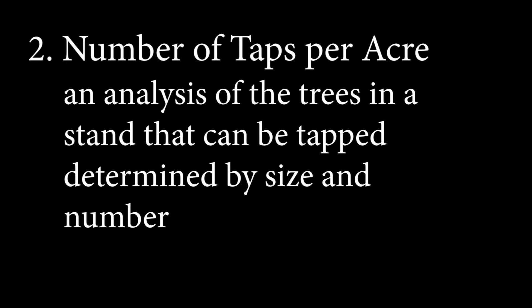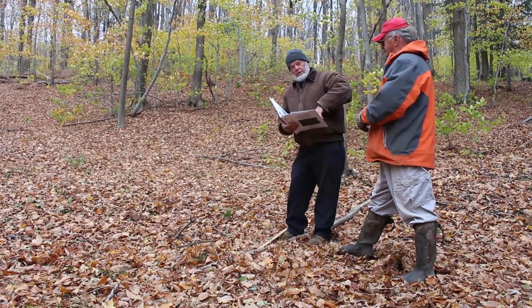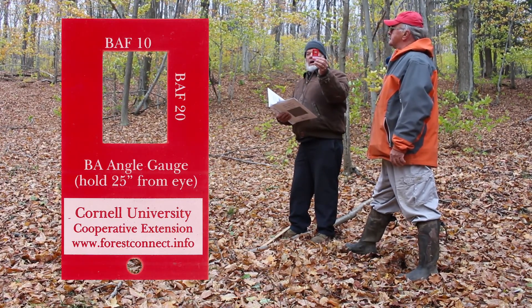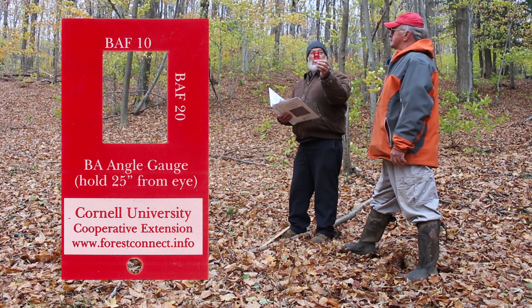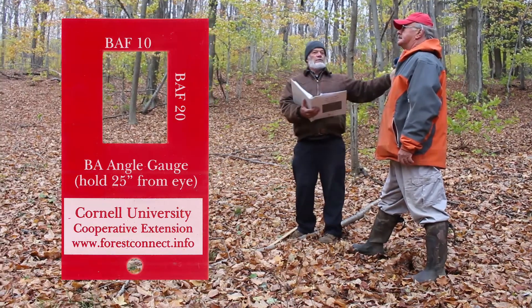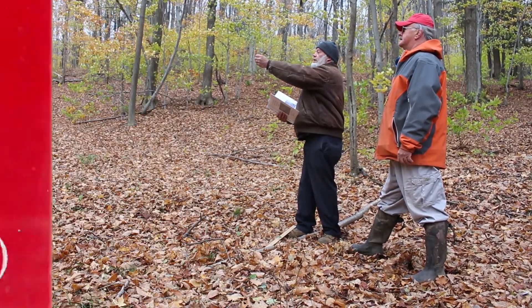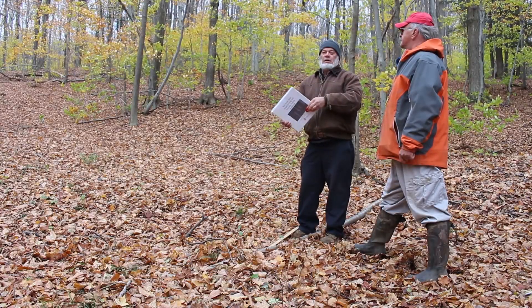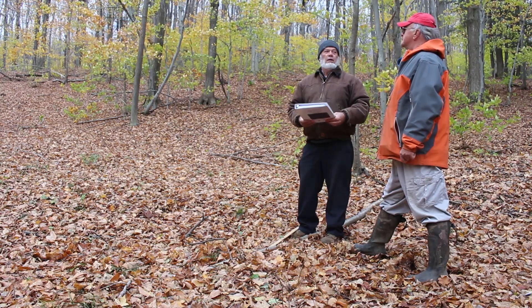Next we're going to do a quick evaluation using a basal area reader. It's a little square that is mathematically designed to tell us what trees are in our circle. We swing a circle, measure the trees that fill that square, and then use a table that will tell us how many maples would be in an acre.